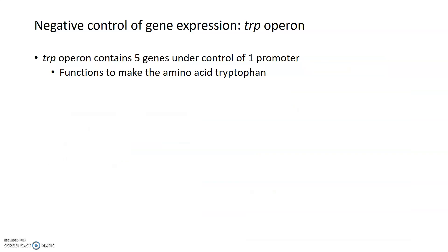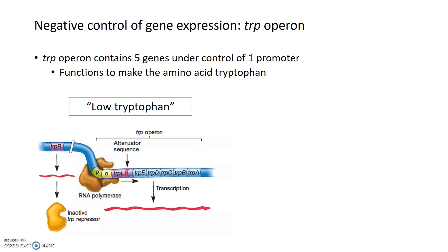There are many different operons that act in response to many different molecules — different sugars such as arabinose, and in this case, amino acids. The trp operon is the tryptophan operon. It acts in response to the amino acid tryptophan, and it contains five genes under the control of one promoter. The function of all five of these enzymes is in the biosynthesis of the amino acid tryptophan. If there's not enough tryptophan and you need to synthesize it, RNA polymerase can bind to the promoter, turn transcription on in the trp operon, and produce tryptophan.